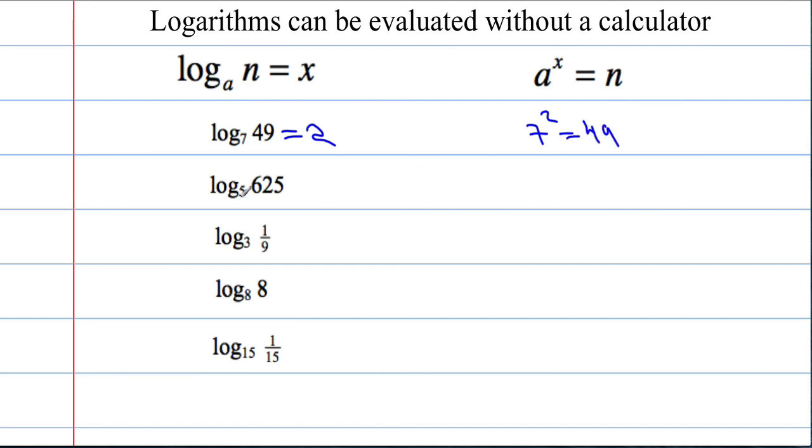What power of 5 gives an answer of 625? Well, 5 times 5 is 25. Times that by 5 again gives 125. Times that by 5 again gives me 625. So that was 5 to the power of 4 equals 625. So log to the base 5 of 625 must be 4.